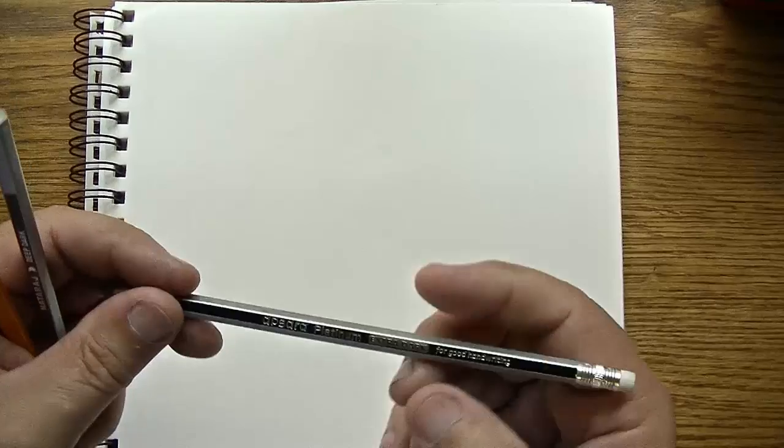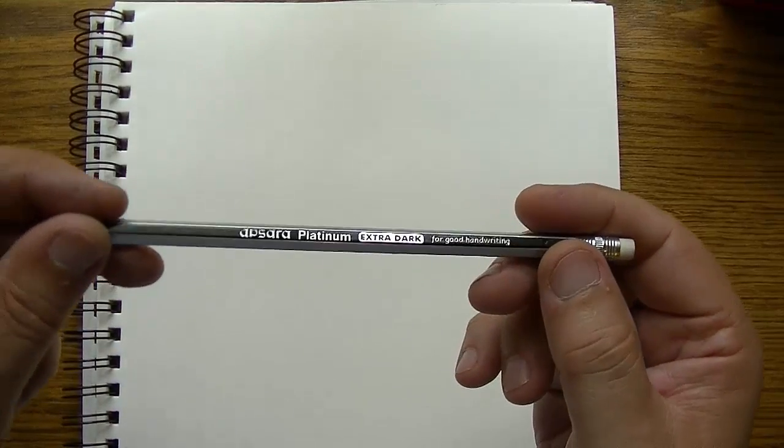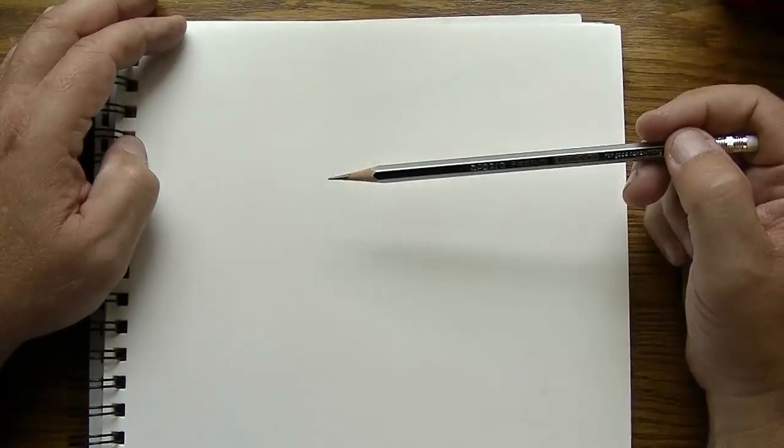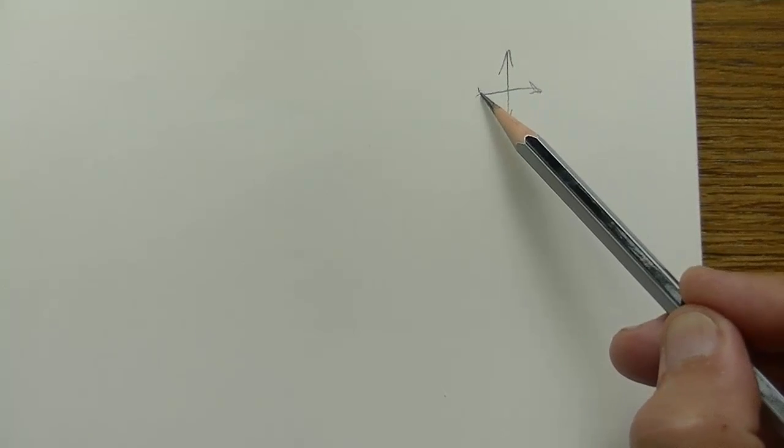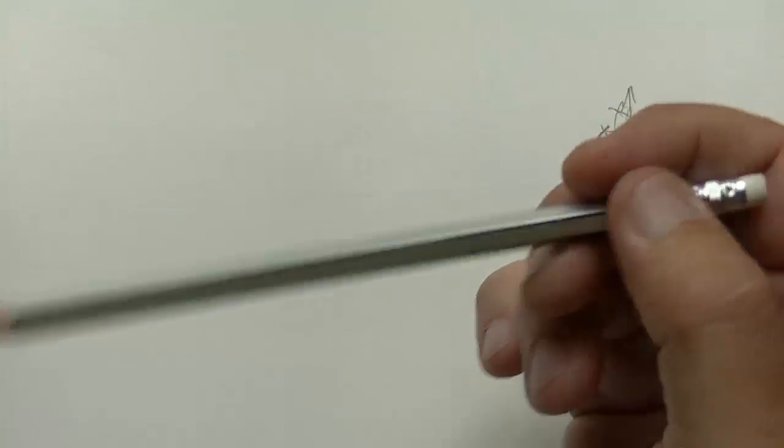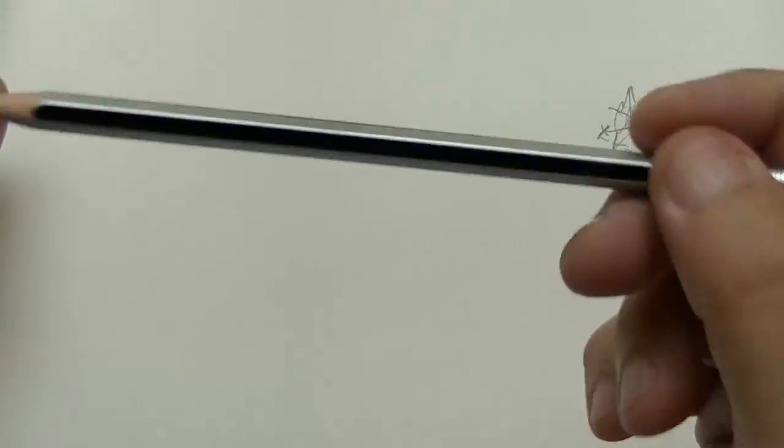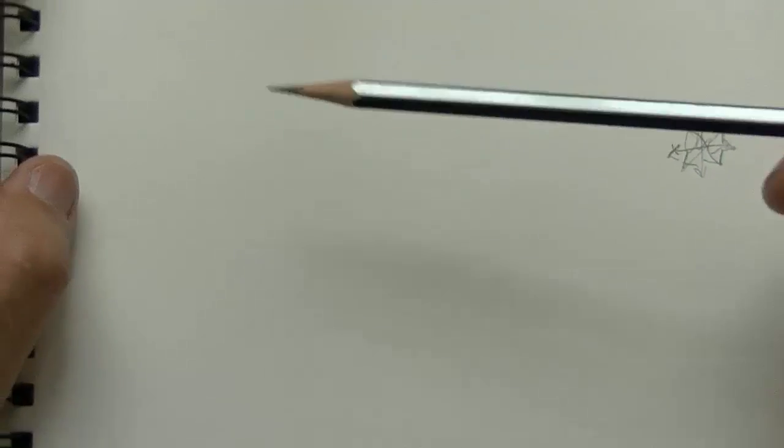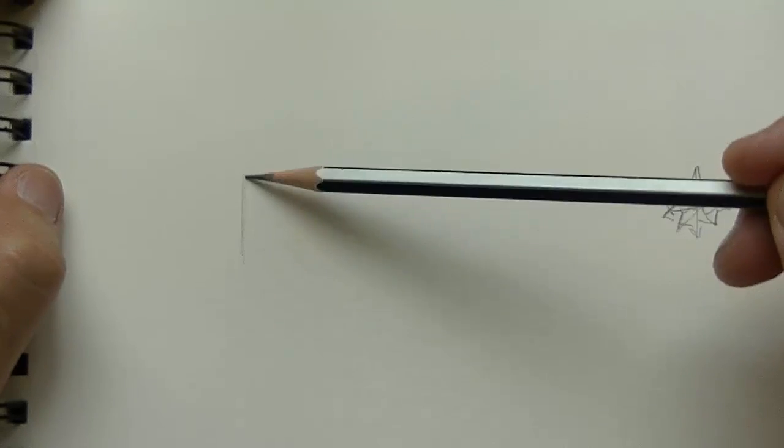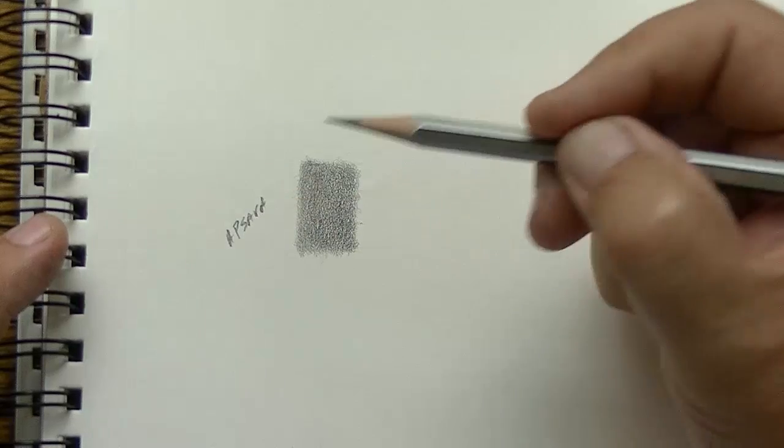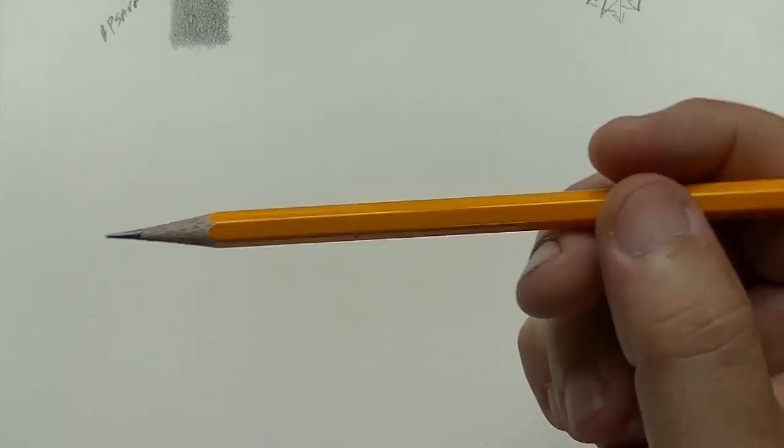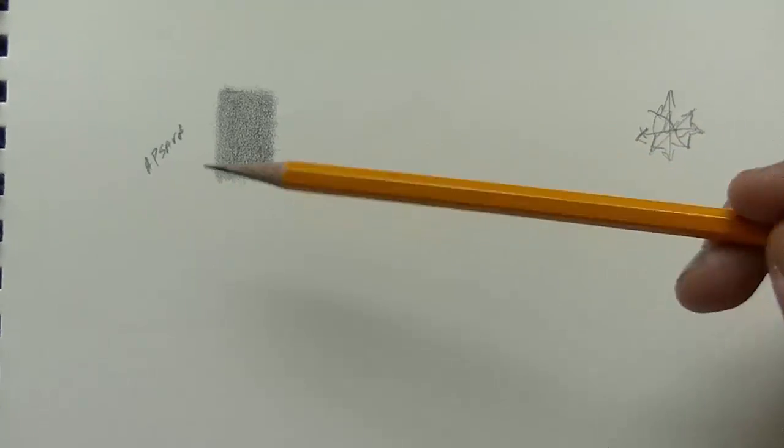Alright. I'm going to start off here with the platinum extra dark. And you know the drill if you watch my other videos. I'm going to draw each rectangle in this direction, this direction, this direction, diagonally like that, so that it covers the whole tooth of the paper. And I hold each one on the end like this so that I let the weight of the pencil itself do all the work and not dig into the paper so here we go.